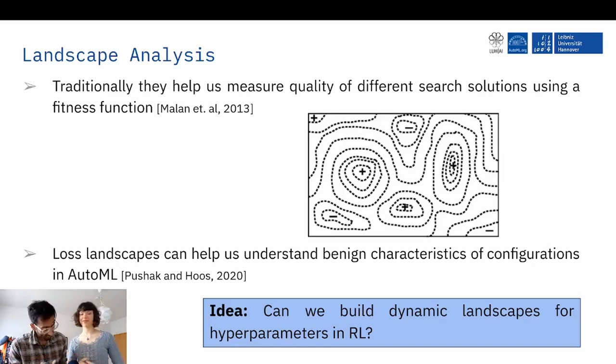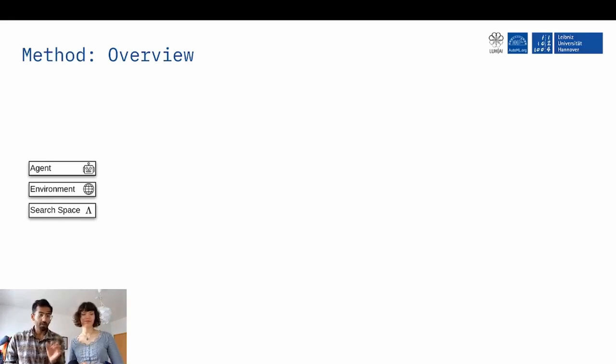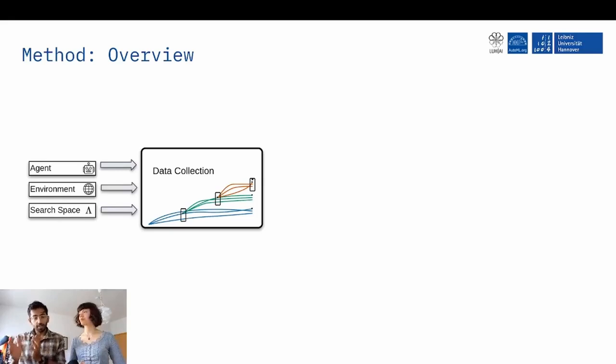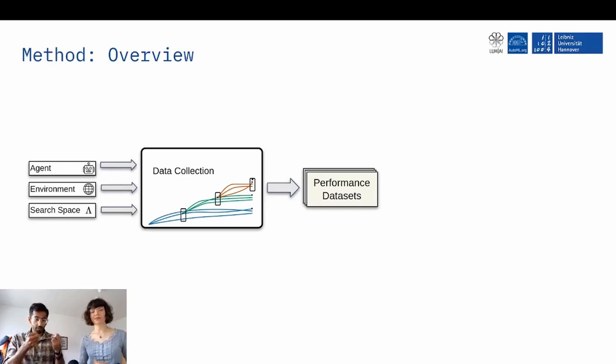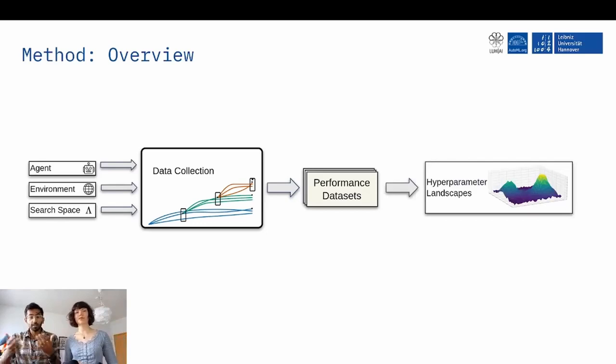And the way we do this is basically take the things that I mentioned previously, which is agent, environment, and the search space, these characterize the solutions, and feed them to a data collection process that records the fitness of different configurations throughout the training process at different points of time. And we take all of these recordings of fitness evaluations and collate a data set through it that we can then use to build dynamic landscapes and do some analysis on these landscapes.